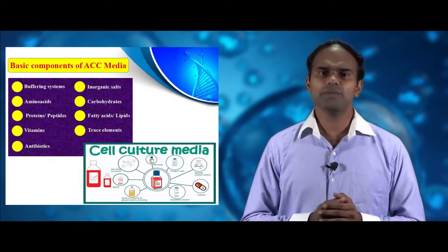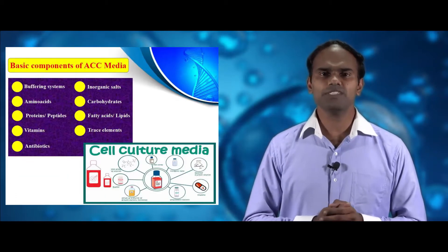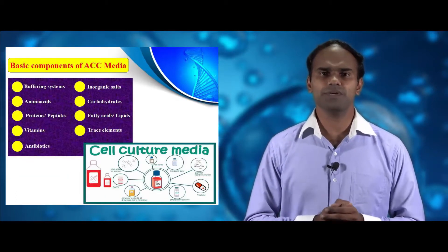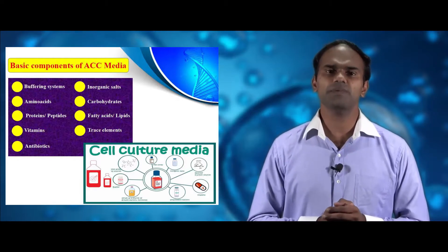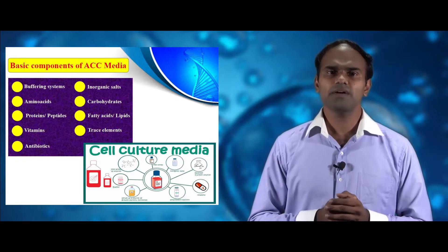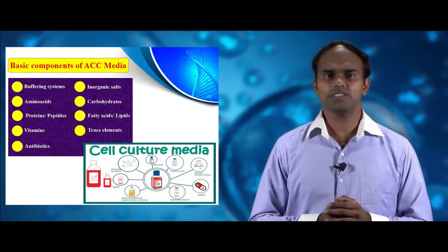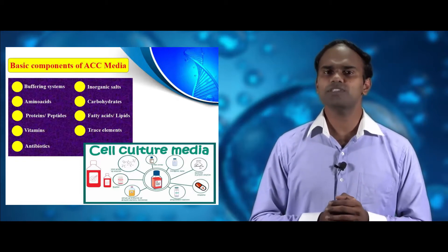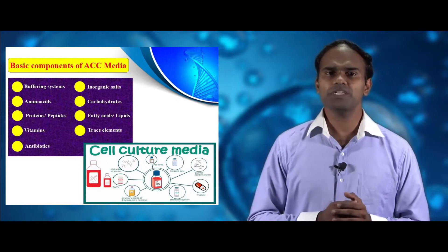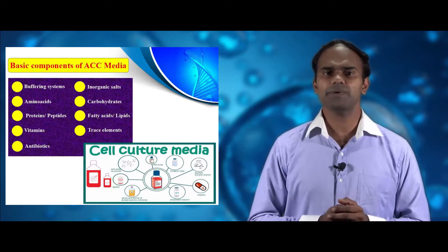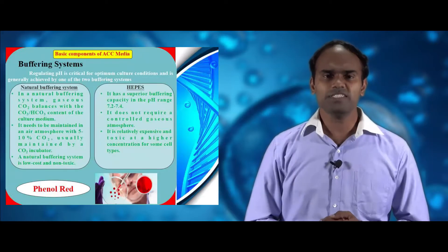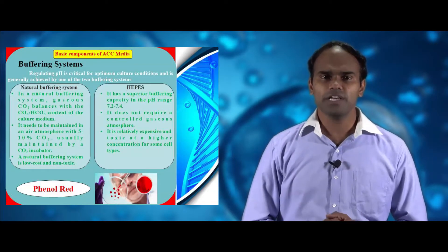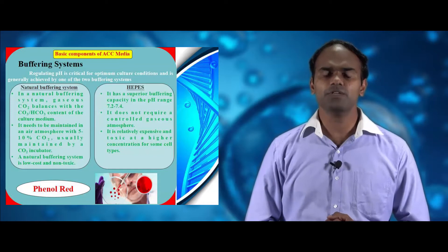Now we see about the basic components present in animal cell culture media. There are many basic components: buffering systems, inorganic salts, amino acids, carbohydrates, proteins and peptides, fatty acids and lipids, vitamins, trace elements and antibiotics. Now we see about buffering systems. Regulating pH is very critical to optimize animal cell culture conditions.